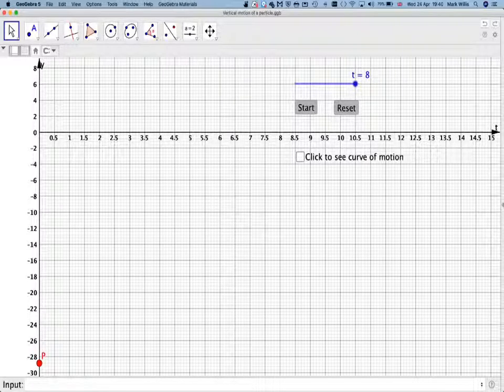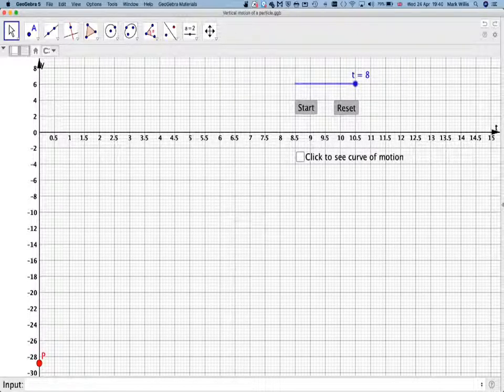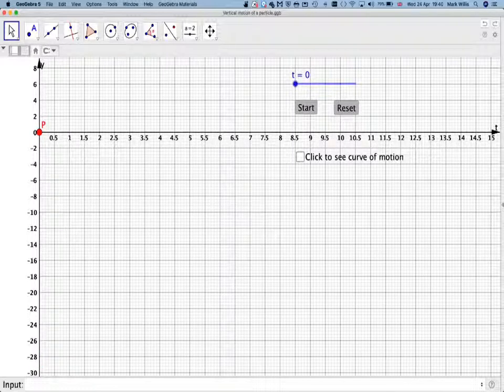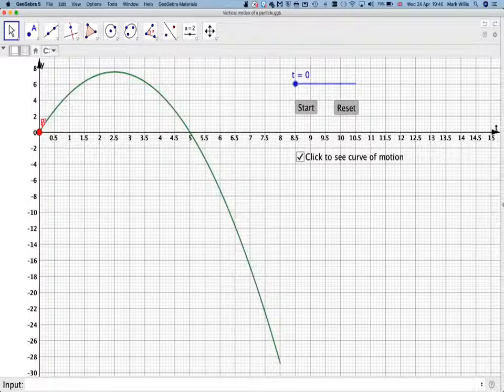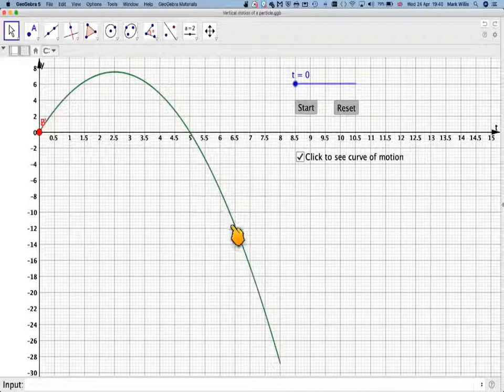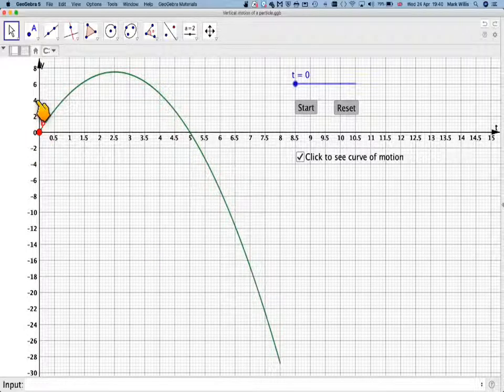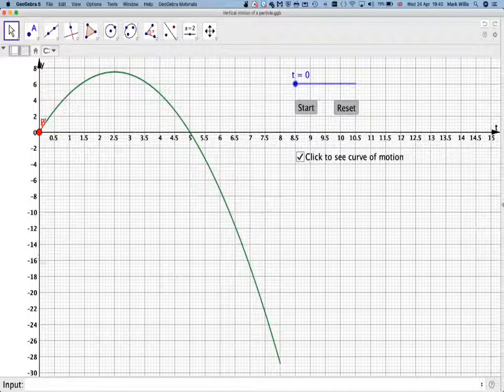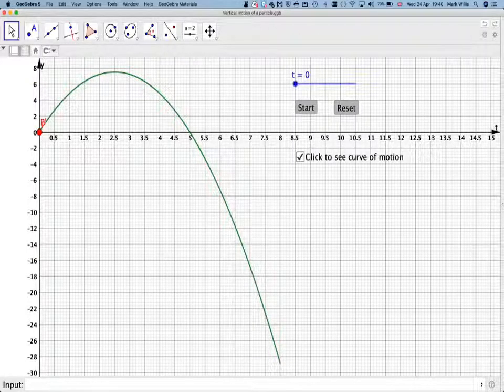So what we want to do is to find what happens to the motion when t = 4. If we click this here, what we've got here is a graph of its motion. Although it's moving up and down in this direction, this is a graph in its motion.